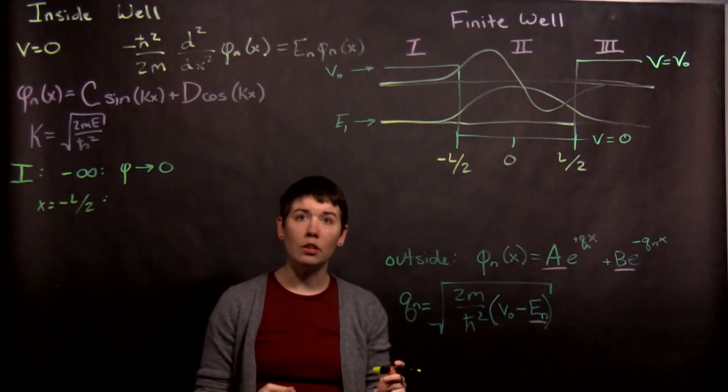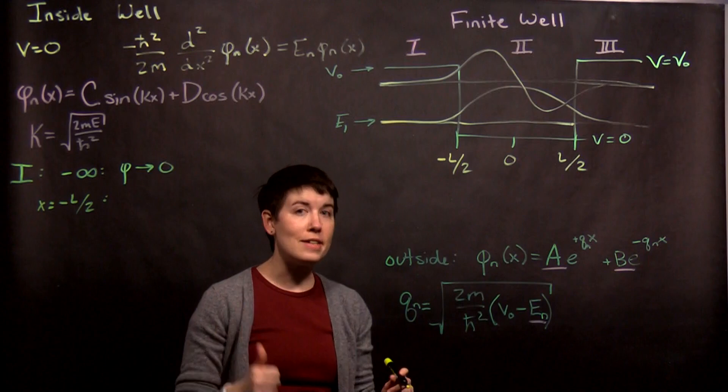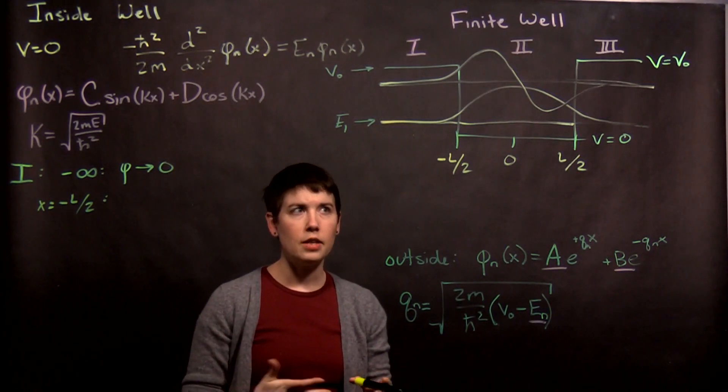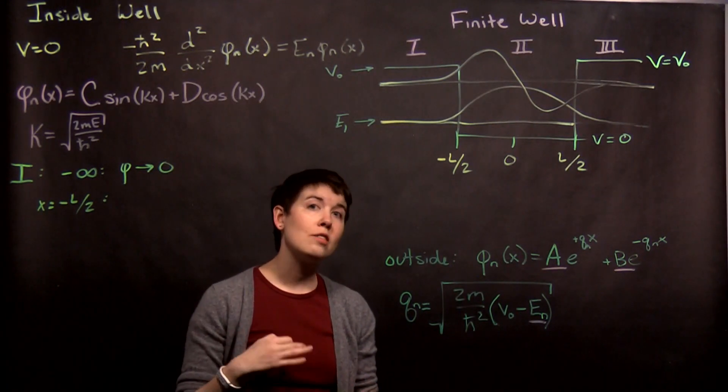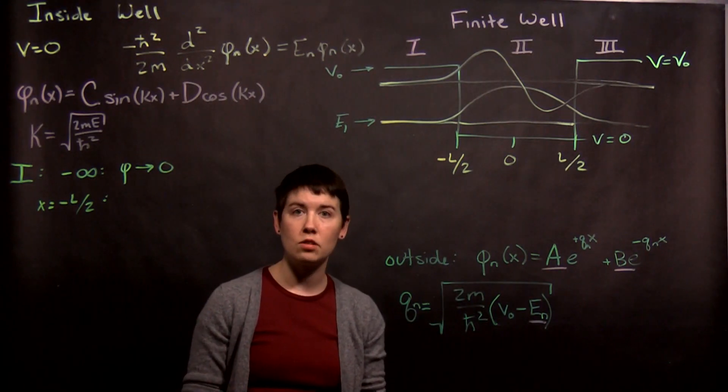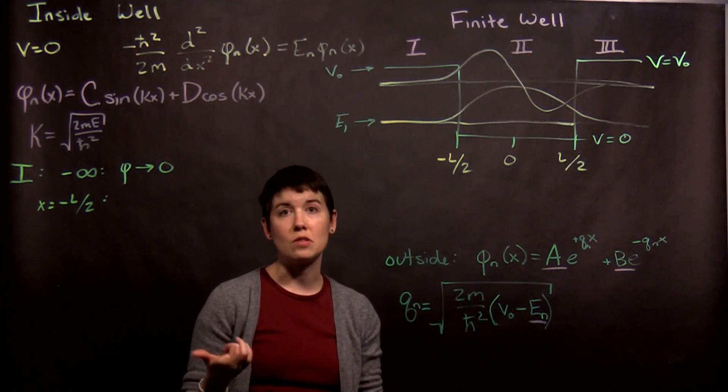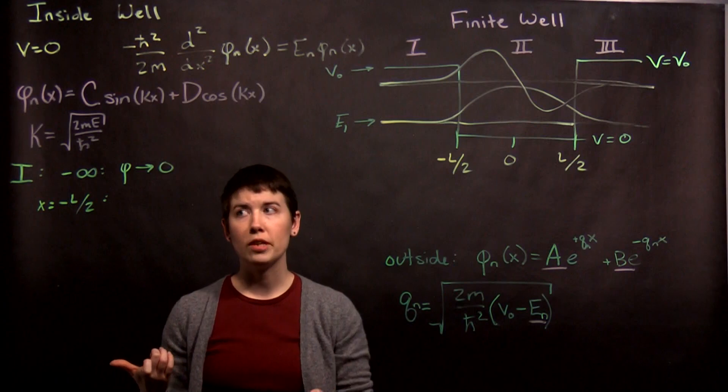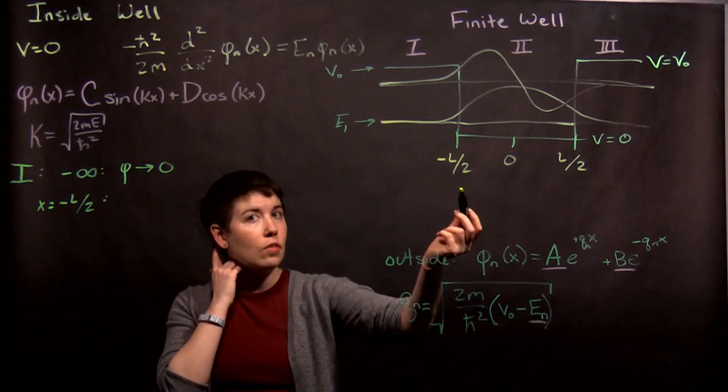There's a rule that our wave function needs to be continuous at all times. Now, a second rule is that as long as our potential is finite, the first derivative also needs to be continuous at all points.